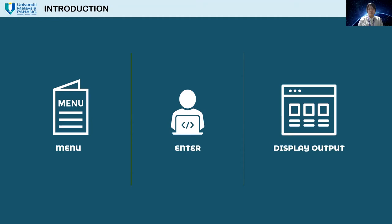In our third component, displaying output, the hotel booking system will display relevant data when the user chooses display customer record based on category, view customer record, or search customer record. When the user chooses search customer record, the system requires the user to key in the booking ID to search and display the data. In view customer record, the system displays all details of customers who have already booked.